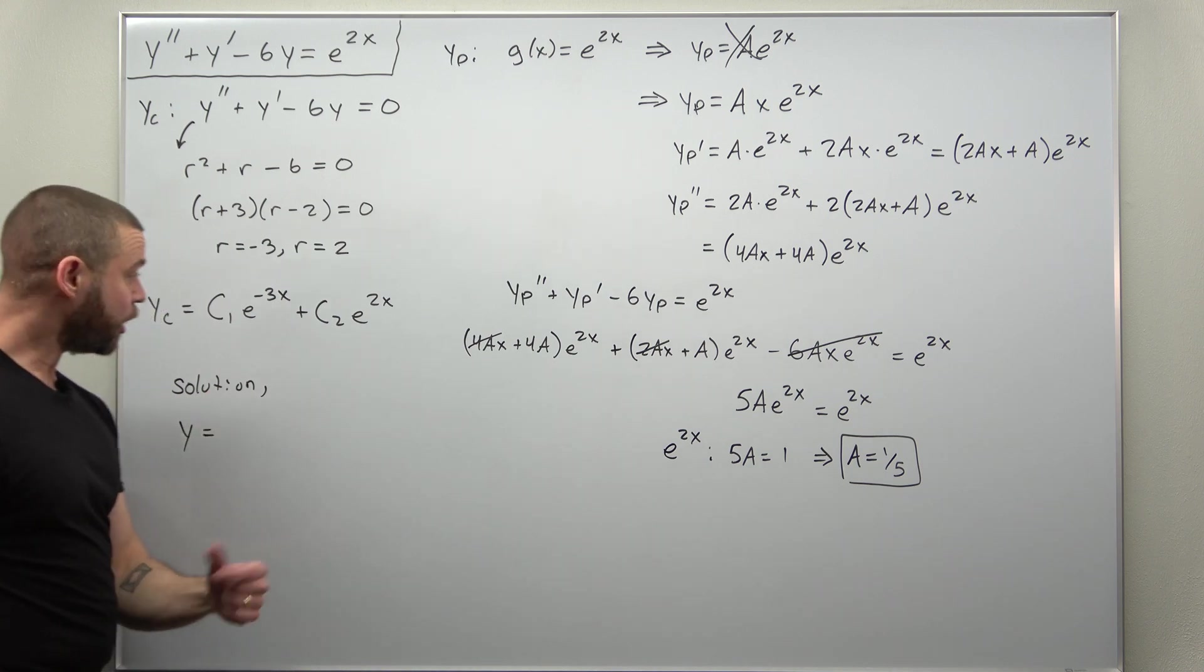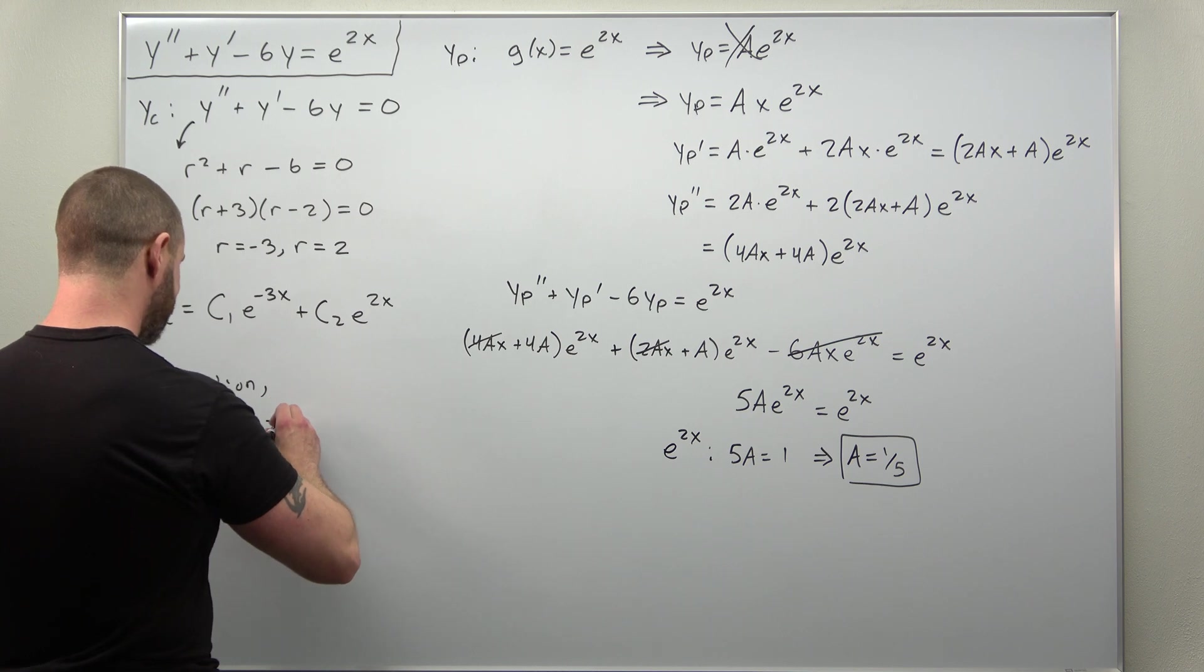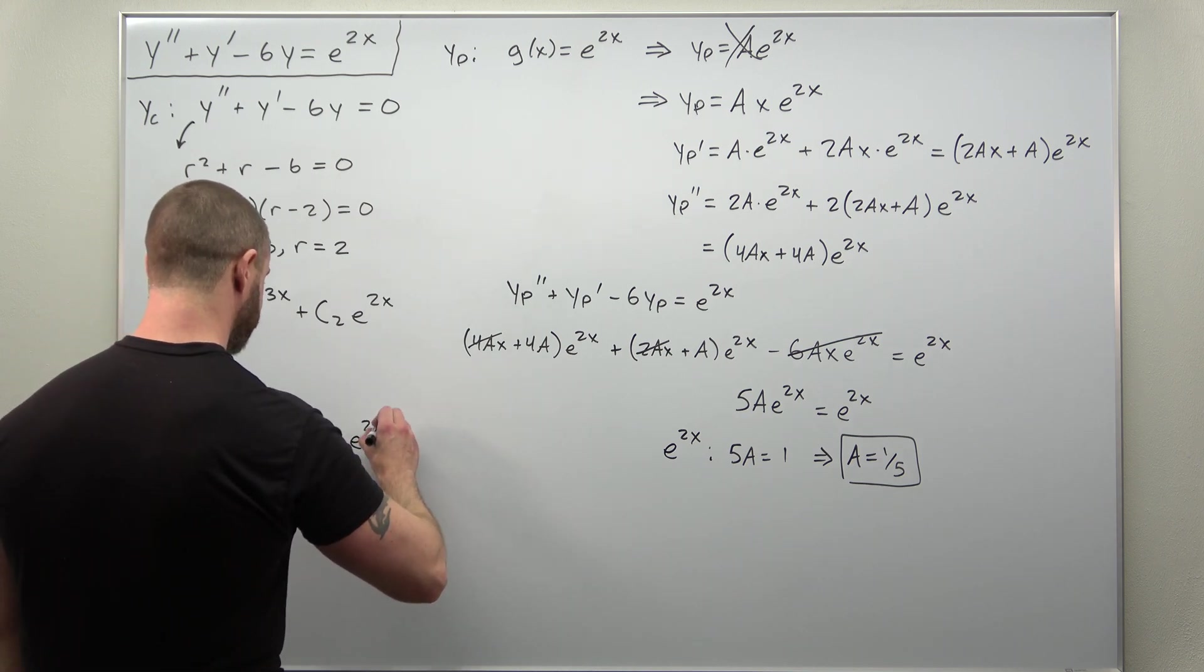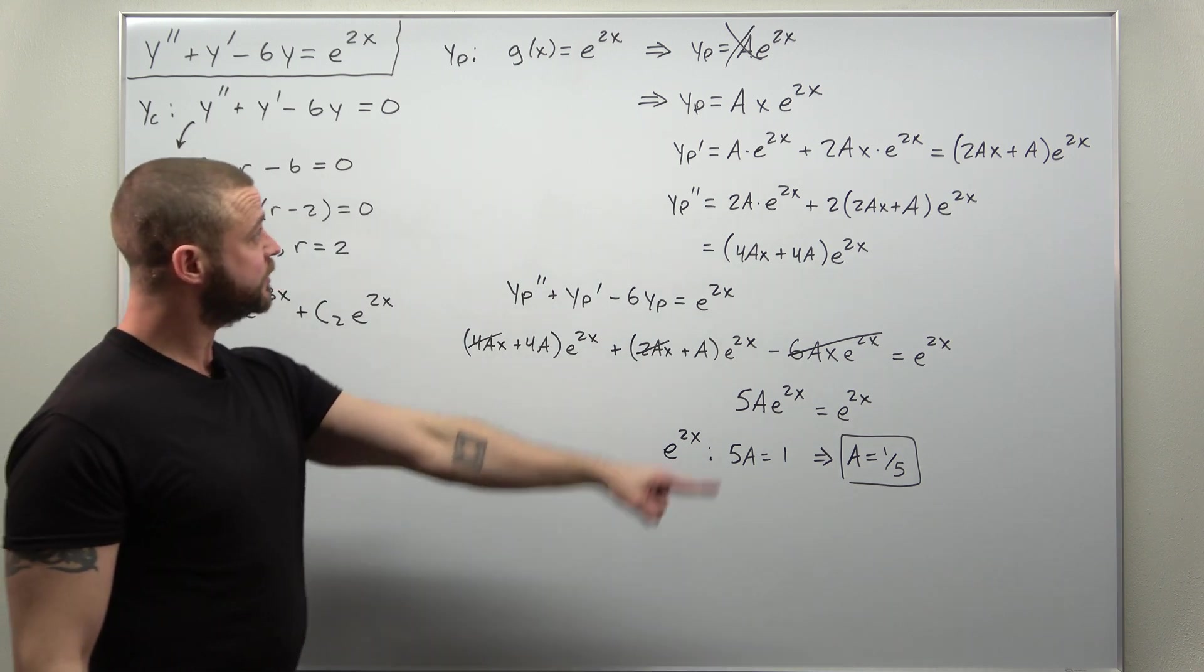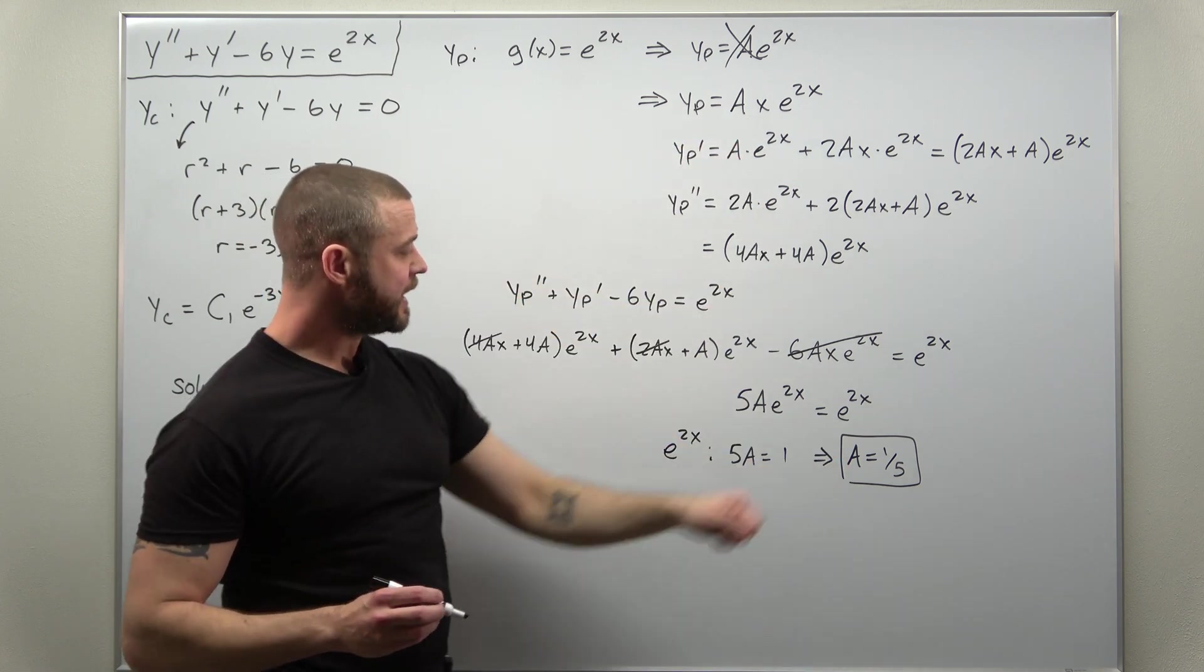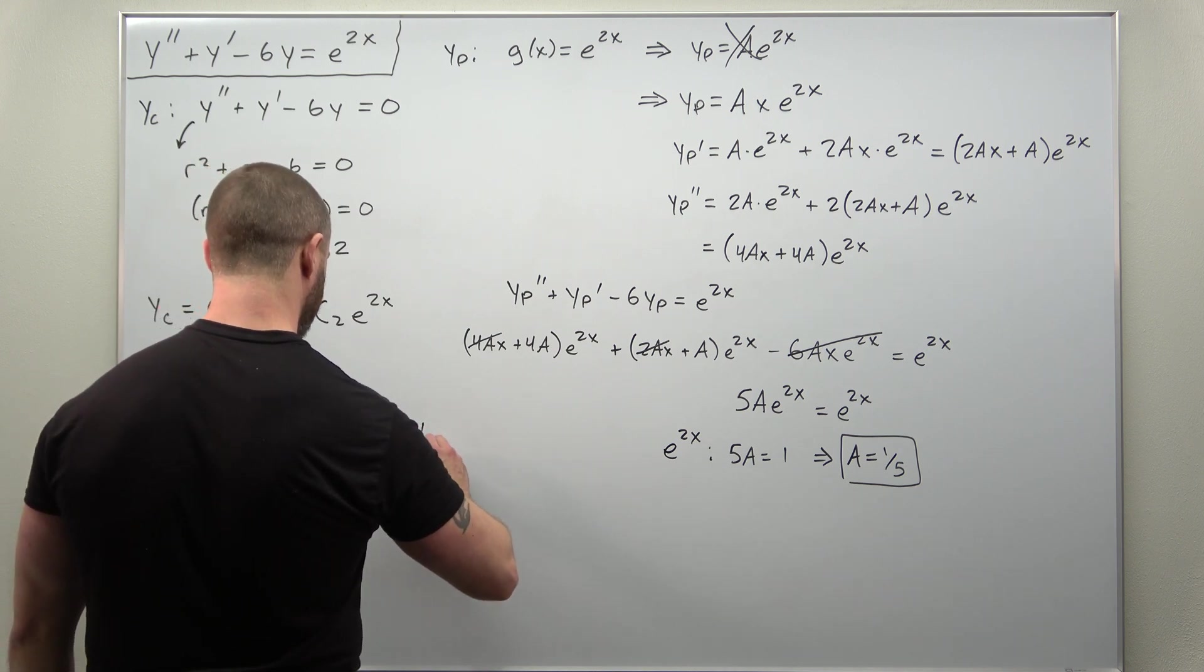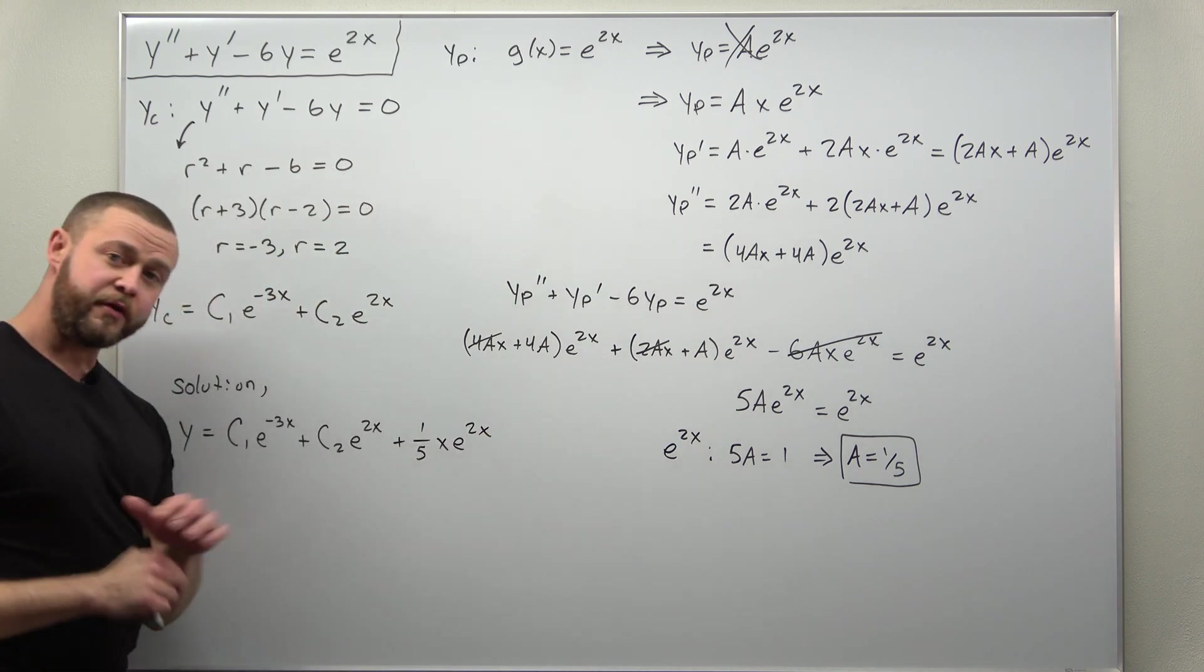As always, let's write down our solution to the non-homogeneous ODE, which is always your complementary solution: C₁e^(-3x) + C₂e^(2x). And now we add to that our particular solution. We included that factor of x due to the duplication. We found A is 1/5. So it looks like we get plus (1/5)xe^(2x).